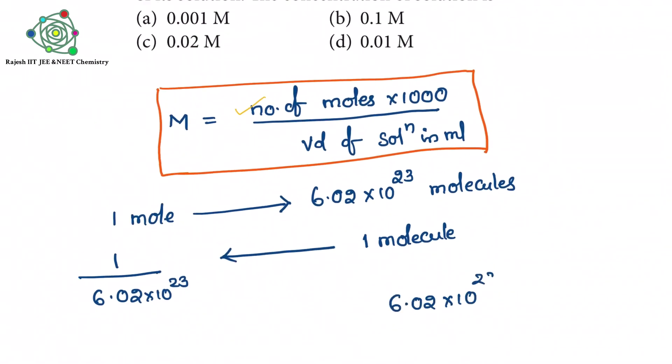So now according to the given information, they gave how many molecules? 6.022 into 10 to the power 20. So both sides we can multiply with this number. So there will be a cancellation.